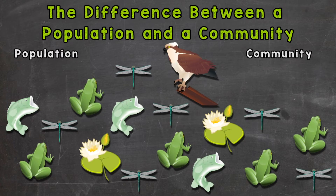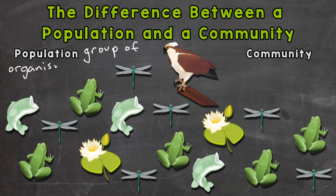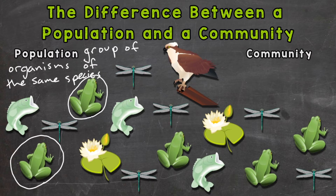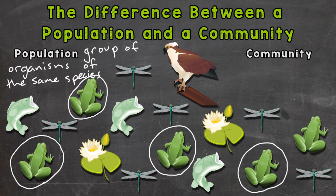Now let's start with population. A population is a group of organisms of the same species in the same area. So for example, with our living things in the pond here, a population would be our population of this particular type of frog — I'll circle our population of this species of frog here.